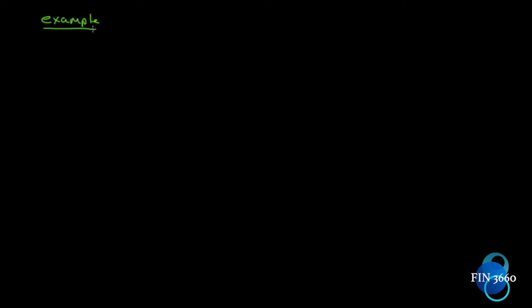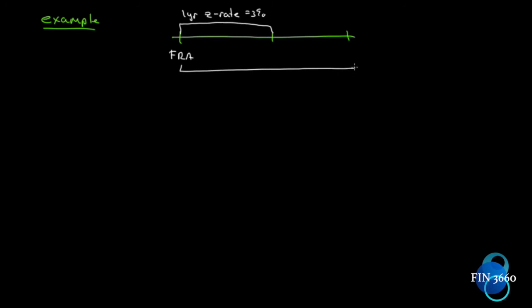Let's look at an example to give this some life. We'll draw out our timeline of what we want to do. We are going to enter into an FRA today. We can observe in the market a one-year spot rate or zero rate of three percent, and a two-year zero rate at four percent. We can calculate the implied forward rate: one year out, a one-year rate equals five percent.